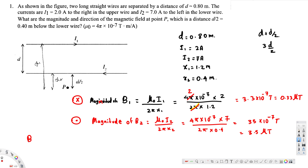The total magnetic field Bt = B1 + B2. Taking out of the page as positive: B2 = +3.5 microtesla and B1 = −0.33 microtesla. So Bt = 3.5 − 0.33 = 3.17 microtesla. Since the result is positive, the direction is out of the page. That's how we solve this kind of problem!